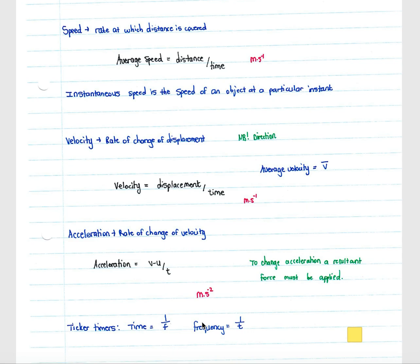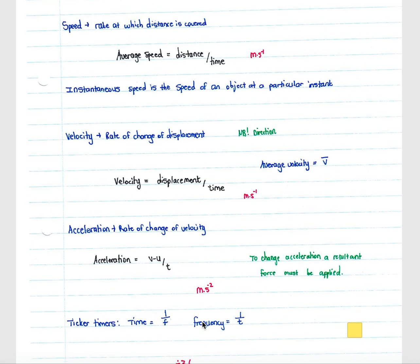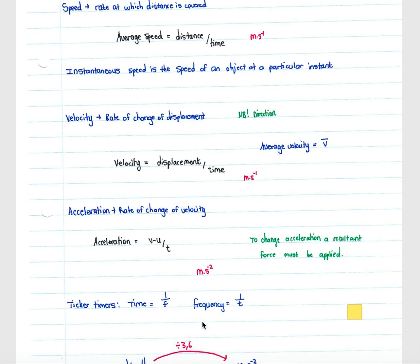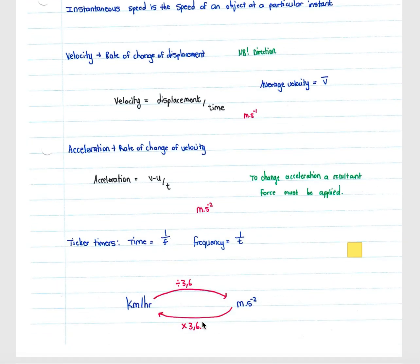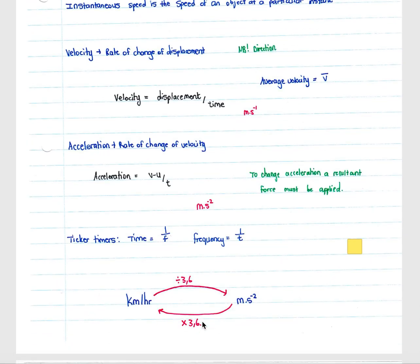In many instances, acceleration, velocity, and speed will be tested with a ticker timer shown on a ticker tape. When given time, you must know that frequency equals one over time, and when given frequency, you must know that time equals one over frequency.